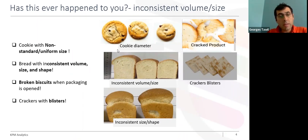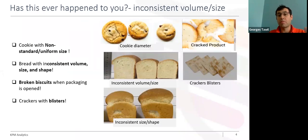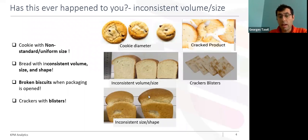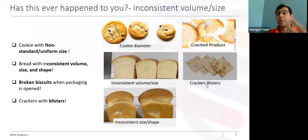If you are in cookie manufacturing, you can experience cookies with non-standard and non-uniform size — for example, finished products with different diameter and different thickness, which is not acceptable for the industry. If you are in the bread industry, one challenge is inconsistency in volume, size, and shape of the finished bread. In the biscuit industry, you can observe cracked product when the packaging is opened, and in the cracker industry, you can observe the appearance of blisters.